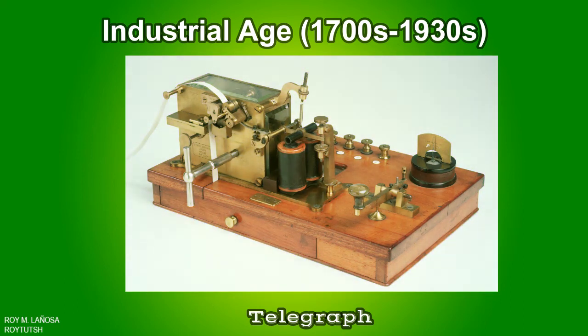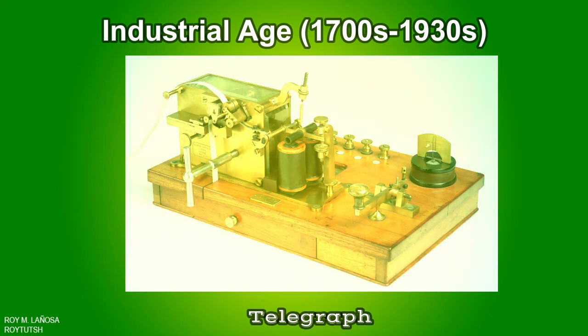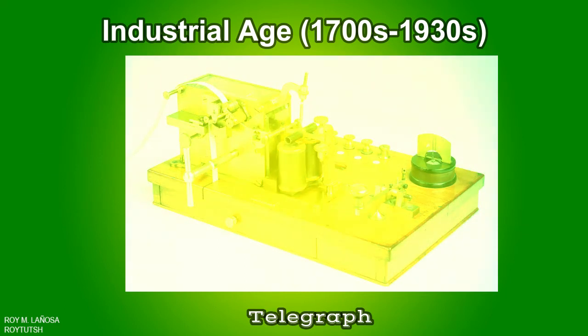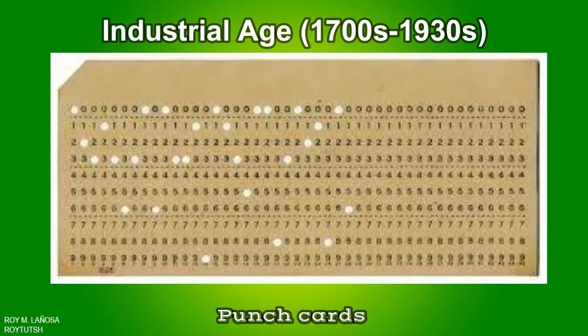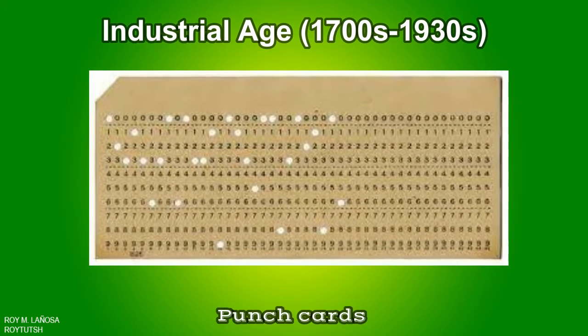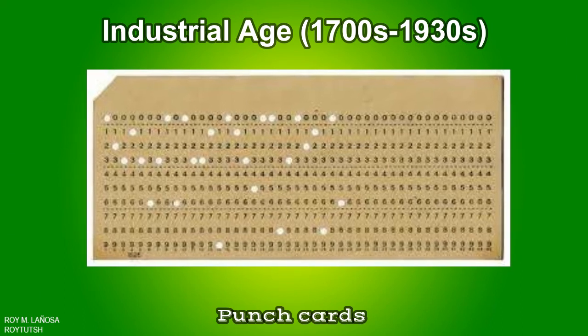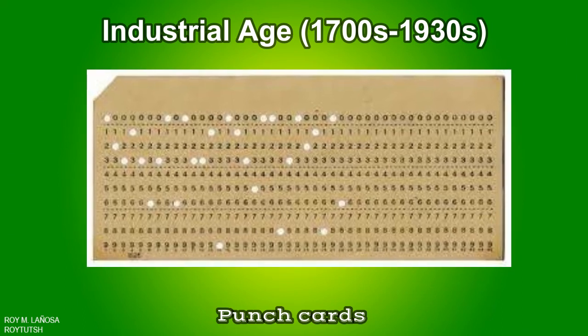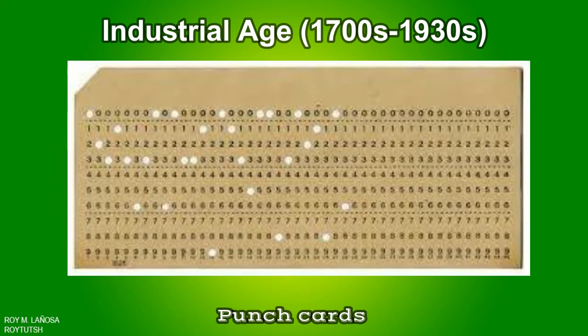The telegraph is a long-distance transmission of textual or symbolic messages — as opposed to verbal or audio — without the physical exchange of an object bearing the message. A punch card is a piece of stiff paper that can be used to contain digital information represented by the presence or absence of holes in defined positions. The information might be data for data processing applications, or in earlier examples, used to directly control automated machinery.